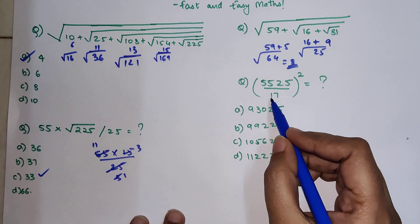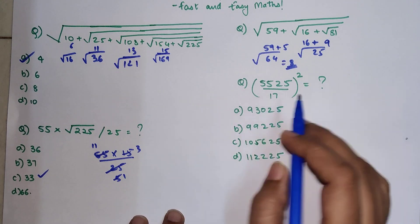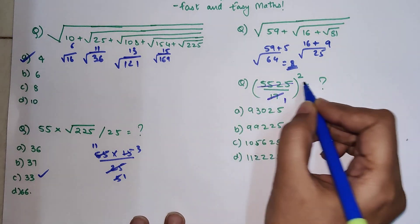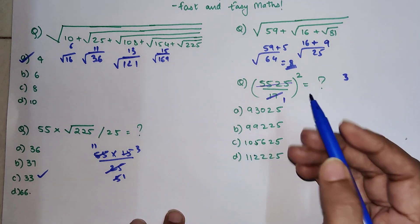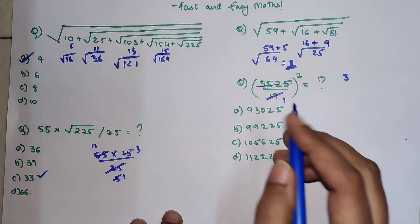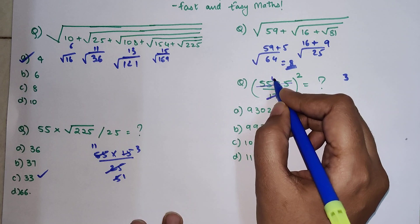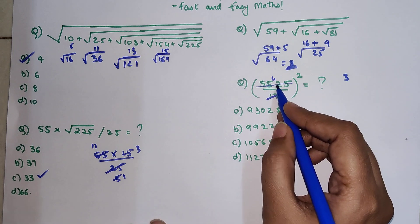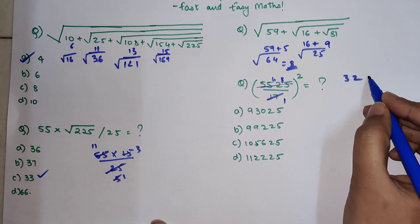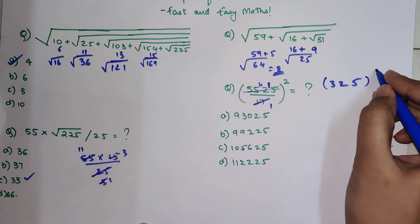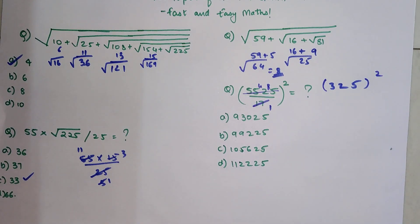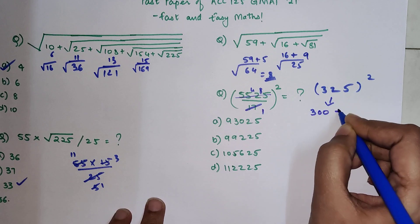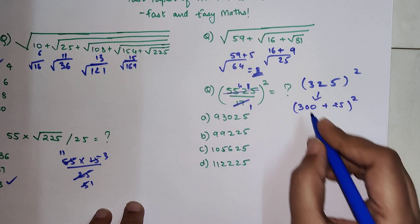The next question is 5525 upon 17, the whole squared. First we cancel — since 17 is a prime number we do the division directly. 17 into 3 is 51, so taking 51 from 55 leaves 4, giving us 42. 17 into 2 is 34, taking 34 from 42 leaves 8, giving 85. 17 into 5 is 85. Now, a lot of students get scared when they have to square a three-digit number, but it is super simple — write 325 as 300 plus 25, the whole squared.